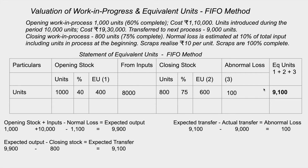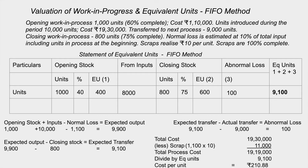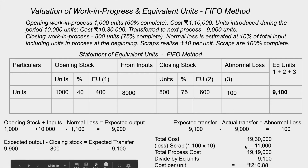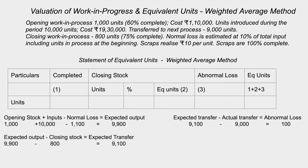So we have closing stock, abnormal loss, and total equivalent units. Cost per unit is calculated as: total cost minus scrap value, divided by total equivalent units. In process costing, scrap value is deducted from total cost before dividing by equivalent units. This is the First-In-First-Out method.